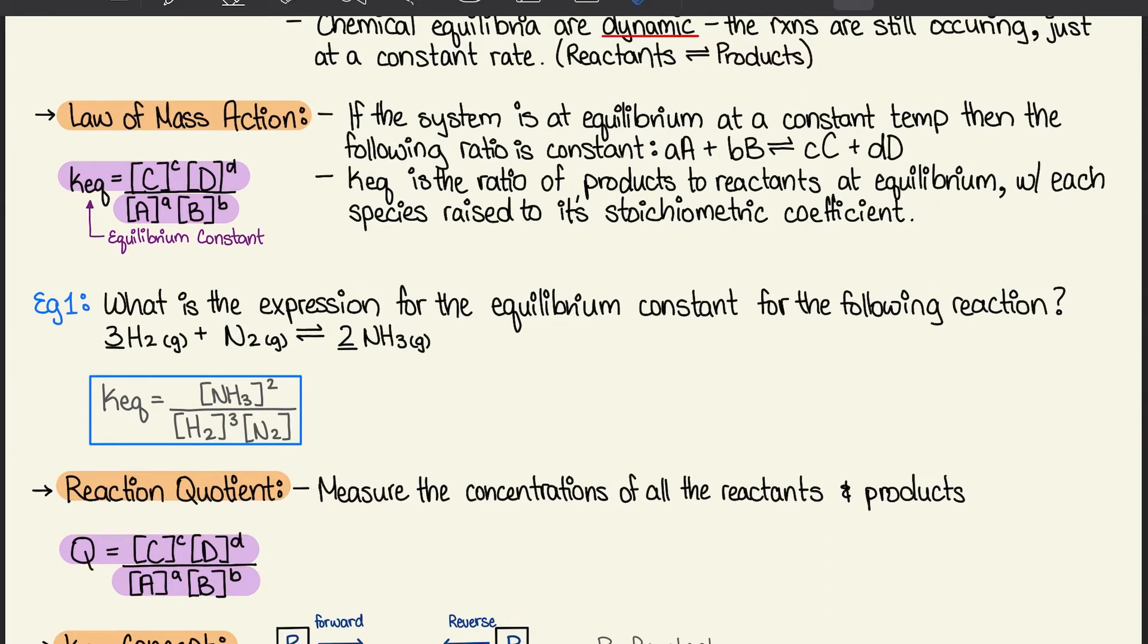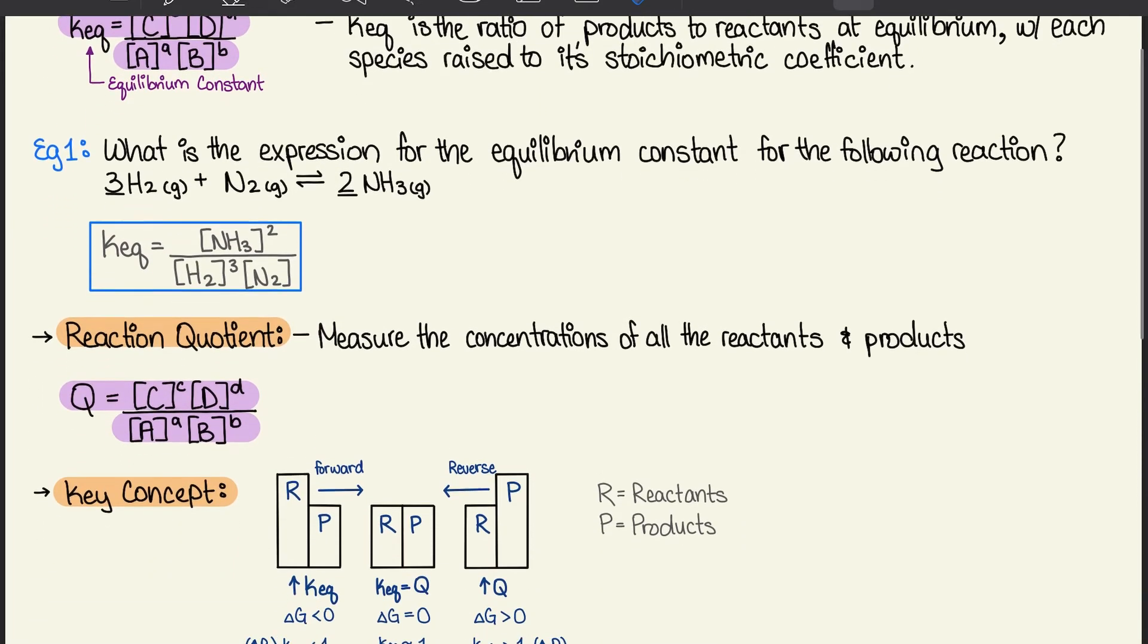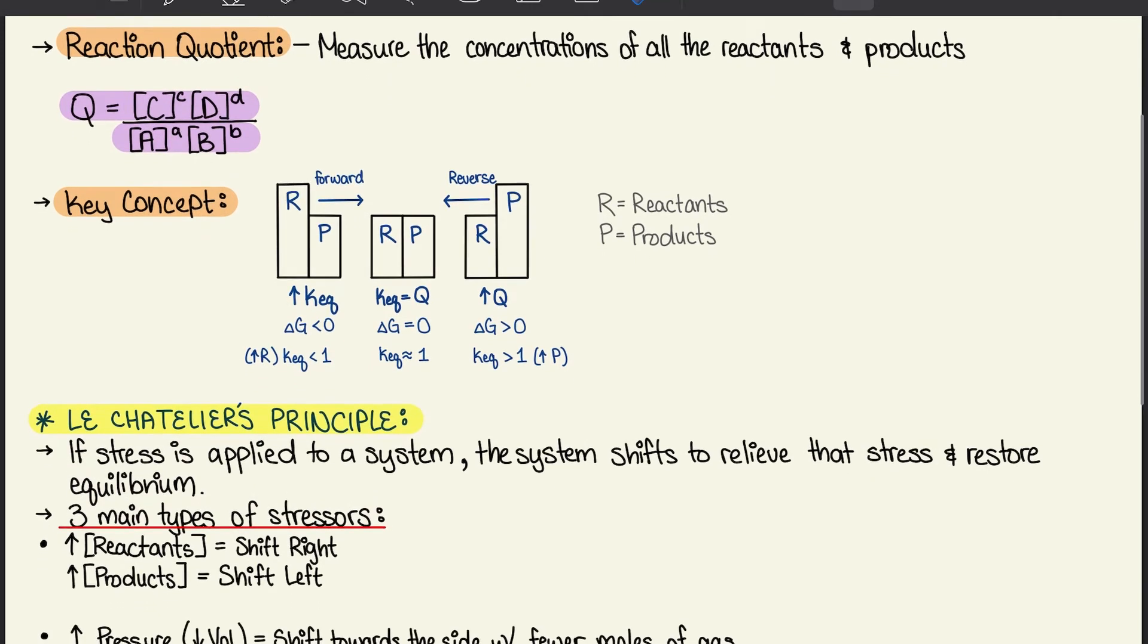So to simplify this, we can say that KEQ is equal to products over reactants. Alright, moving on to reaction quotient. And that's the measure of concentration of all reactants and products. And it's the same thing as the equilibrium constant, but just the KEQ is flipped with the simple Q.